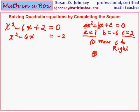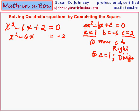Step 2 is to be sure a is a 1. If a is not a 1, then we have to divide by that. In this problem a equals 1, so we don't have to really do this step — but we will see that in the second example. If your a is not a 1, then you must divide the entire equation by a.